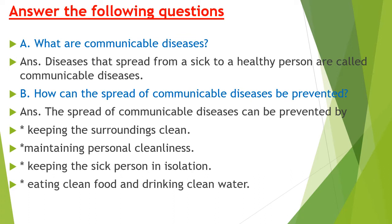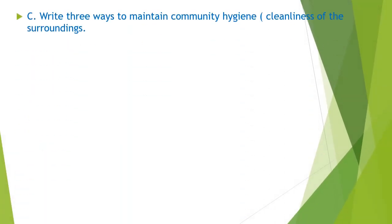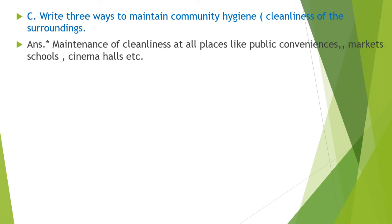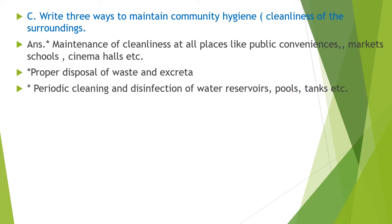One more step we can take is eating clean food and drinking clean water. Part C — write three ways to maintain community hygiene, meaning cleanliness of the surroundings. First, maintenance of cleanliness at all public places like public conveniences, markets, schools, and cinema halls. Second, proper disposal of waste and excreta. Third, periodic cleaning and disinfection of water reservoirs, pools, tanks, etc. By maintaining these three ways, we can maintain community hygiene.